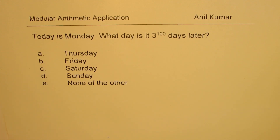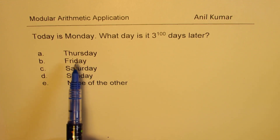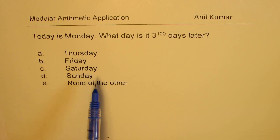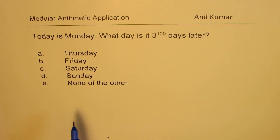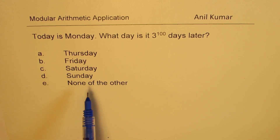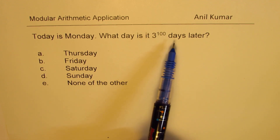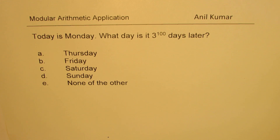We are given five choices here. You can pause the video, answer the question and then look into my solution. Now the concept here is that in a week there are seven days, so it is a cyclic order of seven days. We need to find which one of these seven days corresponds to three to the power of hundred days later.